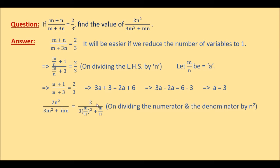So 2n squared divided by n squared gives us 2 in the numerator. For the denominator, the first term 3m squared over n squared can be written as 3 times m squared divided by n squared, and m squared divided by n squared can be expressed as m over n whole squared — so we write 3 multiplied by m over n whole squared. Then plus mn divided by n squared: one n cancels, giving us plus m over n. Now substituting a in place of m over n, we have 2 over 3a squared plus a.